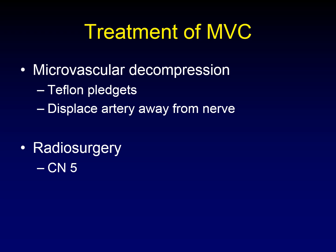How do we treat microvascular compression? There's a surgical technique called microvascular decompression. We take Teflon pledgets — like little sponges — and place them between the offending artery and the injured nerve. This displaces the artery away from the nerve and absorbs its pulsations, allowing the nerve to heal. An alternative technique is radiosurgery, used almost exclusively on cranial nerve five in this circumstance.